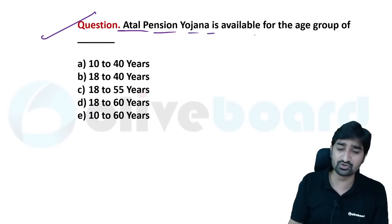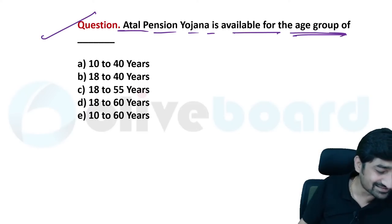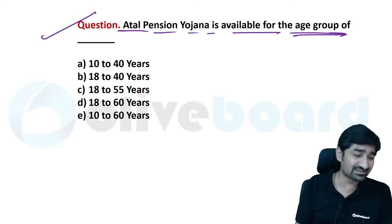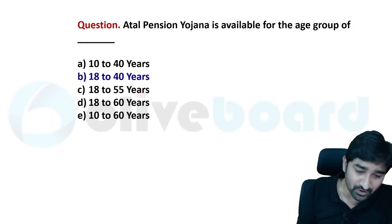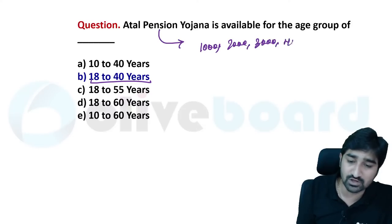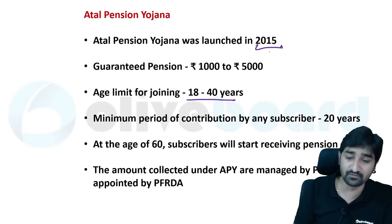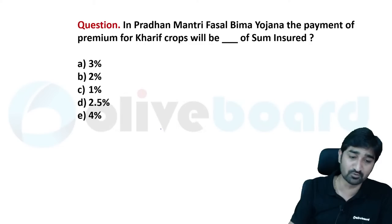Atal Pension Yojana is available for the age group of 18 to 40 years. There are 5 pension options: 1000, 2000, 3000, 4000, and 5000 rupees per month. It was launched in 2015 by PM Modi. The minimum contribution period is 20 years, and pension starts after age 60. Pradhan Mantri Fasal Bima Yojana — the premium for Kharif crop is 2% of sum assured, for Rabi crop it is 1.5% of sum assured, and for cash/horticulture crops it is 5% of sum assured. It was launched on 14th January 2016.